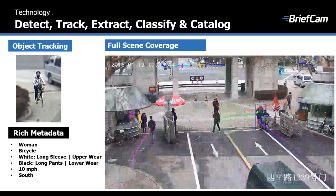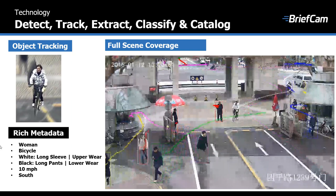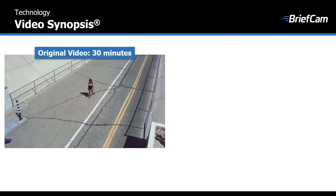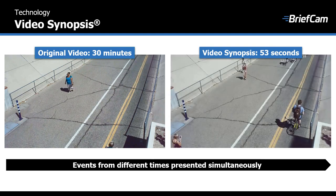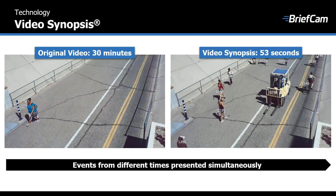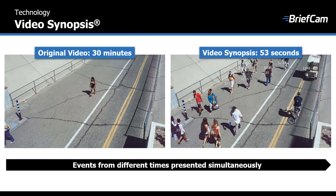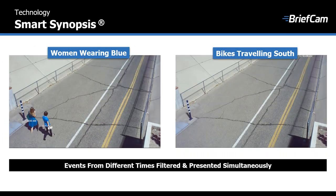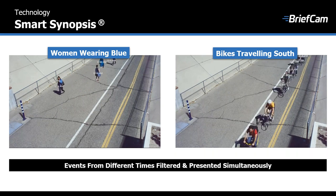We extract full scene coverage and every object's metadata. BriefCam's video synopsis — patented video synopsis — is how the company was born. It's a very unique way of taking a long period of video, for example 30 minutes, and by simultaneously presenting different objects at different times in the same place, we significantly reduce the time needed to view recorded video — very important in investigations. We can go one step further with smart synopsis and filter, for example, only women wearing blue or bikes traveling in a certain direction, making our time to target even faster.